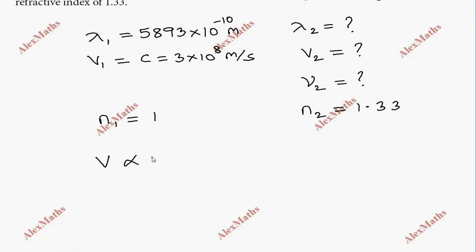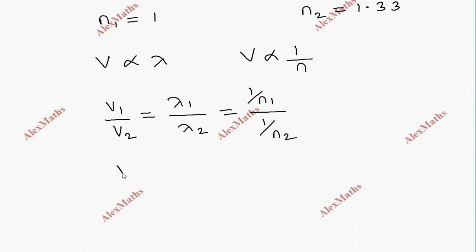Velocity is directly proportional to lambda and inversely proportional to the refractive index. So v1 by v2 is directly proportional to lambda 1 by lambda 2, and v1 by v2 also equals n2 by n1.